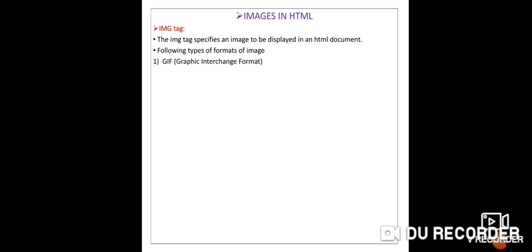The first format is GIF — Graphic Interchange Format. The second is JPEG — Joint Photography Experts Group. The third is XPM, which stands for X PixMap. And the last is XBM — X Bitmap Image. These are the four different formats of images. This question has been asked in last year's board exam.